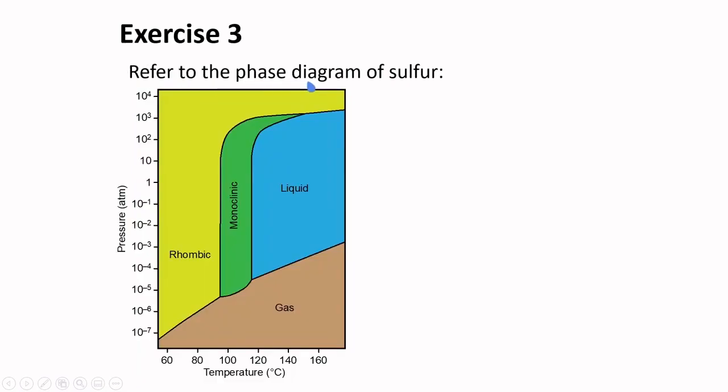Refer to the phase diagram of sulfur below. How many triple points are there for sulfur? The triple points for sulfur are here, here, and here. Thus, there are three triple points for sulfur.